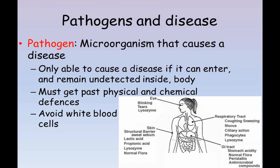The human immune system is based around white blood cells. Pathogens are microorganisms that cause disease. Our bodies have many defenses to prevent these from entering us in the first place — things like our skin, hairs, stomach acid and so on. If a pathogen gets past these defenses and into our bodies, our white blood cells need to identify them and fight them off. If this doesn't happen, the pathogen will be able to reproduce and cause the disease.